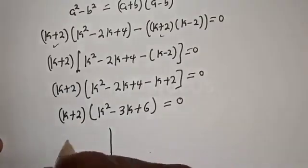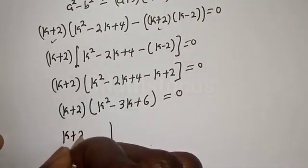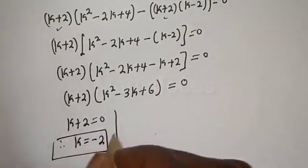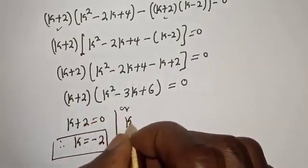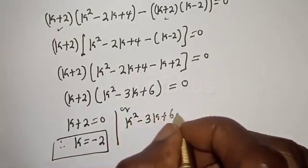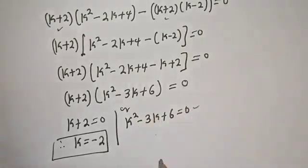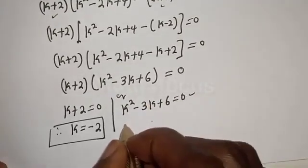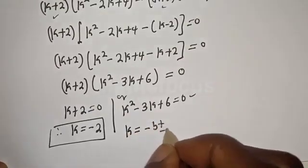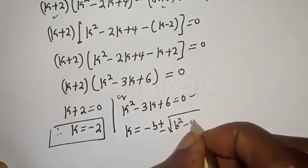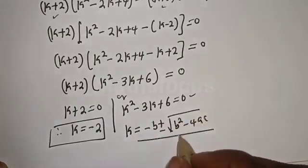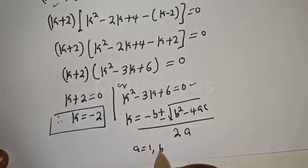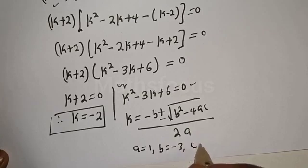There are two cases. The first case: k plus 2 equals 0, therefore k equals minus 2. Or the second case: k squared minus 3k plus 6 equals 0. This is a quadratic equation solved using the quadratic formula: k equals minus b plus or minus square root of b squared minus 4ac, over 2a. Here a equals 1, b equals minus 3, c equals 6.